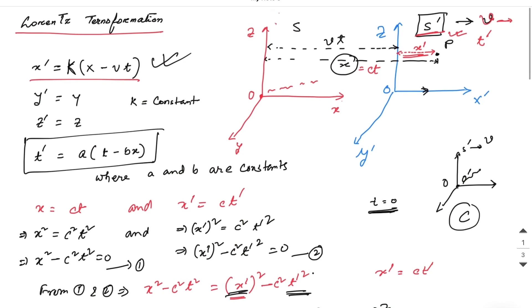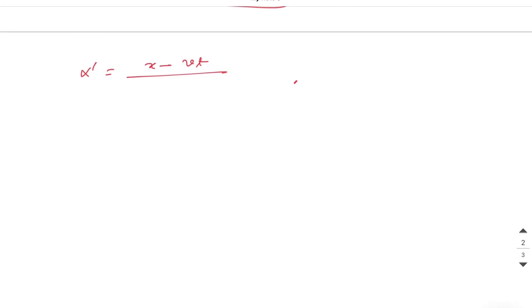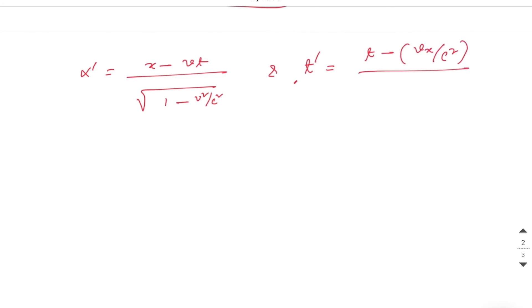Using the values of k, a, and b in the equations, we get the Lorentz transformation: x' = (x − vt)/√(1 − v²/c²) and t' = (t − vx/c²)/√(1 − v²/c²), along with y' = y and z' = z. These four equations together are called the Lorentz transformation.